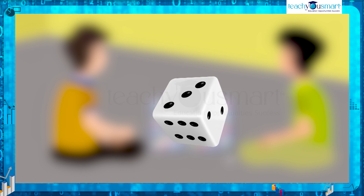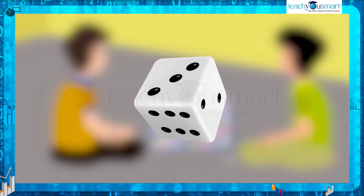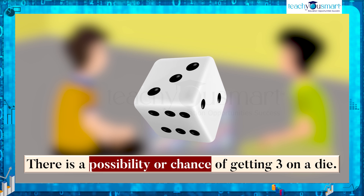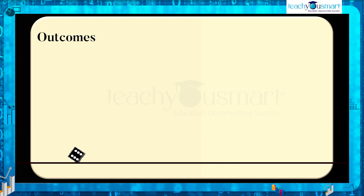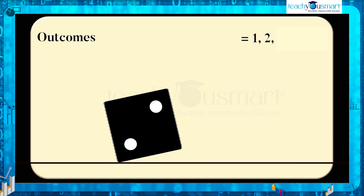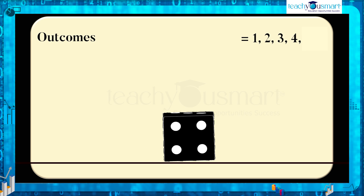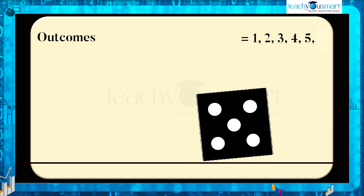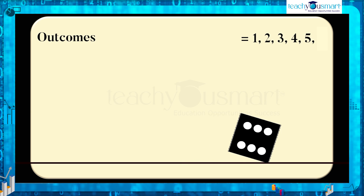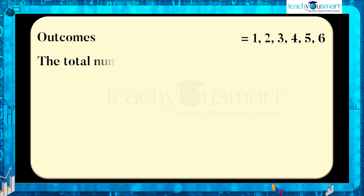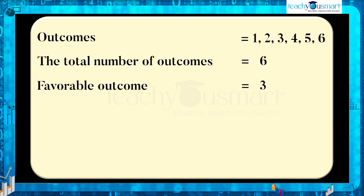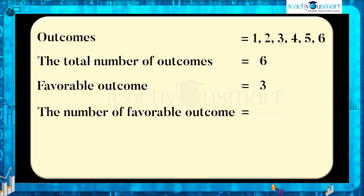We cannot say with certainty whether Jackson will get the number three or not, but there is a possibility or chance of getting three on the die. Throwing a die is an experiment that can have outcomes one, two, three, four, five, and six. That is, the total number of outcomes equals six. Since our favorable outcome is number three, the number of favorable outcomes is one.